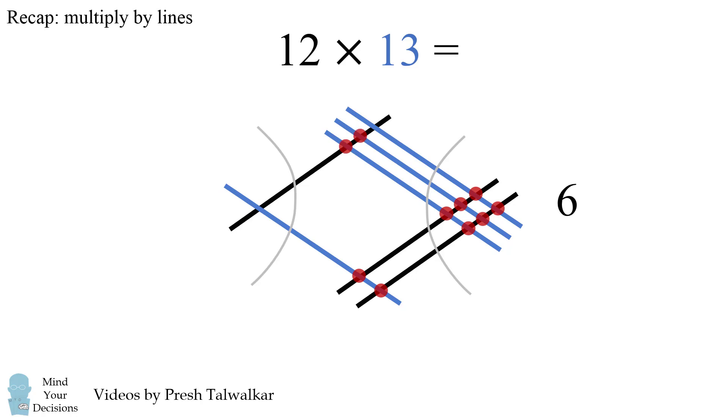In the middle, we can count there are five intersections, and on the far left, there is one intersection. We then read the numbers from left to right to get the answer. 12 times 13 is equal to 156.